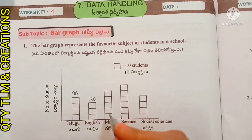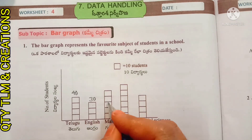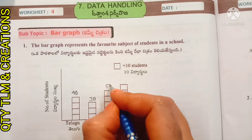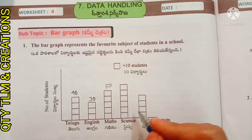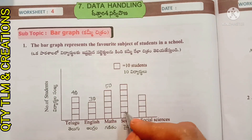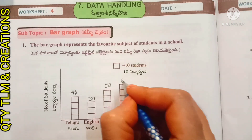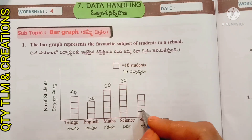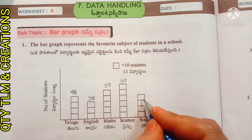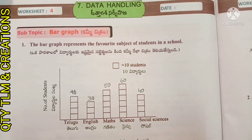For Maths: there are five boxes, so fifty students like Maths. For Science: there are six boxes, so sixty students like Science. For Social: there are four boxes, so four tens equal forty. Forty students like Social.